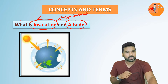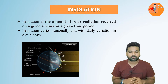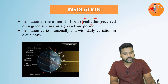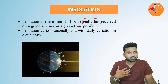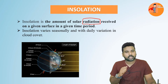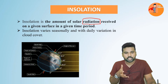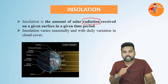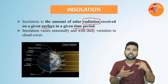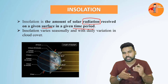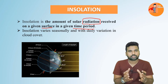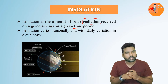Let us begin with insolation. Insolation is the amount of solar radiation — solar energy in the form of radiation — that is received by a given surface at a given time period. It may be the earth or any other surface, any celestial body which is receiving energy from a source. That amount of solar energy we generally call insolation.